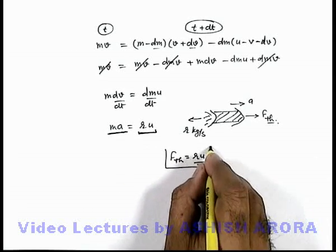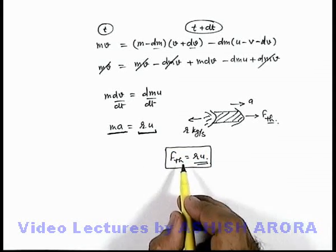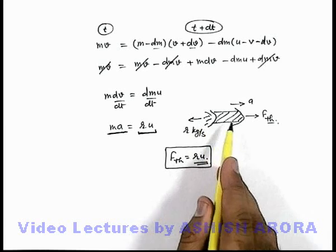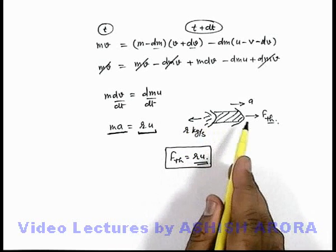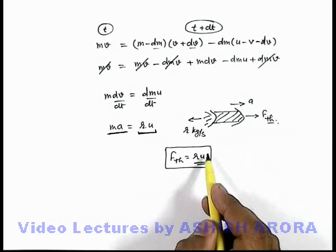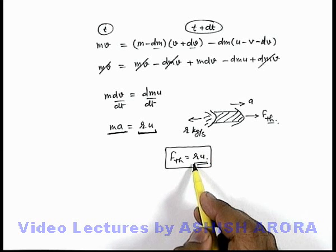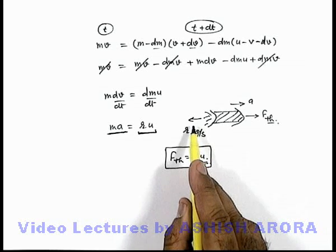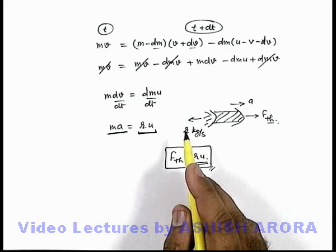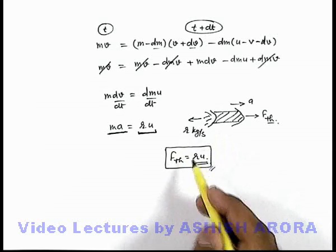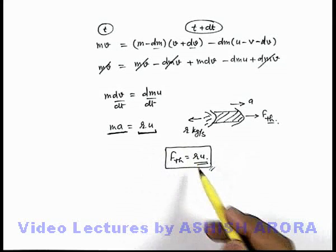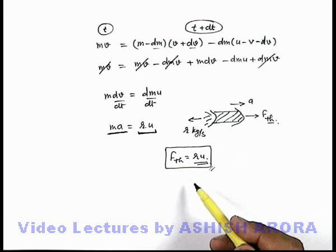Always keep this expression in mind: the net thrust due to ejection of gases from a rocket, or from any moving object from which mass is ejected, is in the direction opposite to ejection of mass. The body experiences a thrust given as the product of the rate of ejection of mass and the relative speed at which the mass is being ejected from the body. Using this, we can analyze velocity, mass, or any other parameter asked in different types of questions.